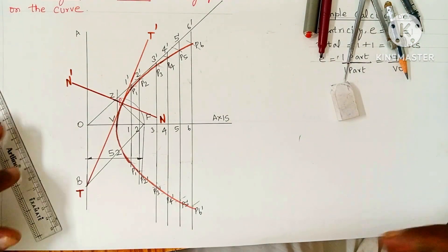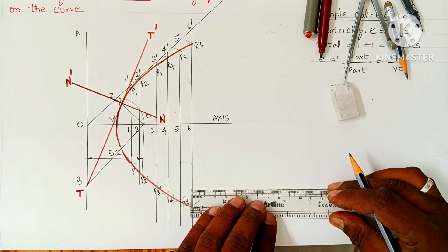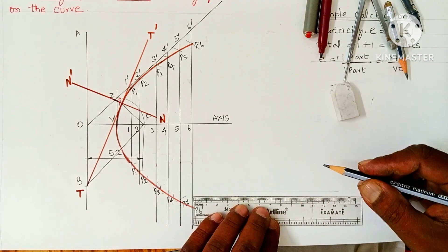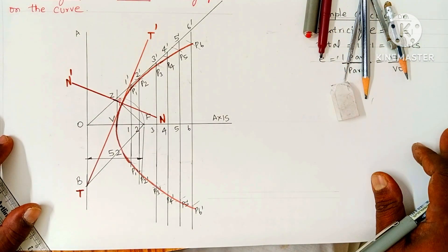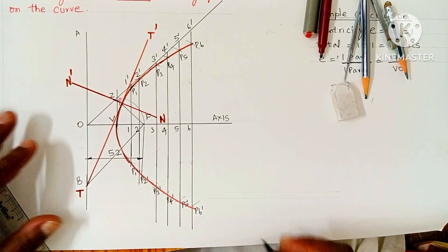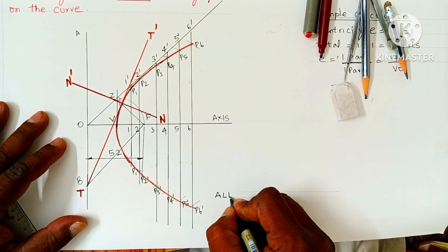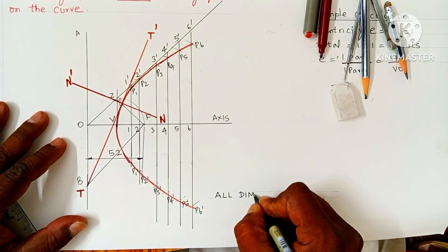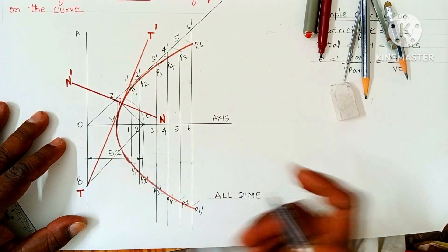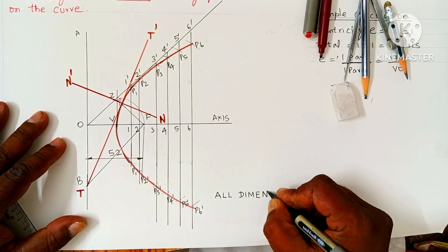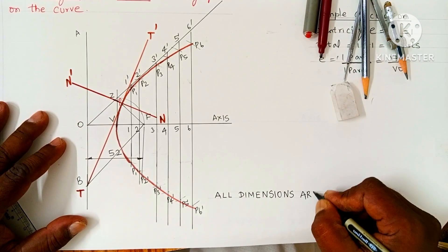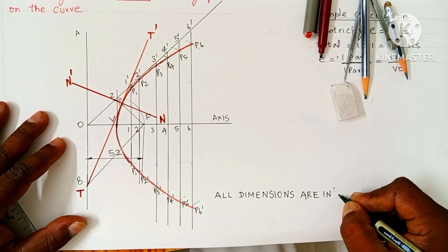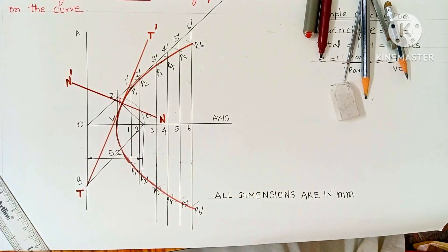On the right side lower part of the drawing, draw two guidelines for uniform letter height and write the common representation: 'All dimensions are in mm' — write mm in small letters. The unit of 52 mm follows this convention. Practice this and you will score better marks in the university examinations. Thanks for listening.